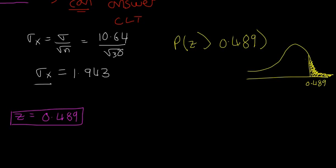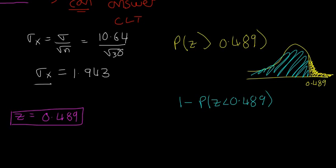This is the same as saying 1 minus the probability of z less than 0.489, which is 1 minus this blue area here.